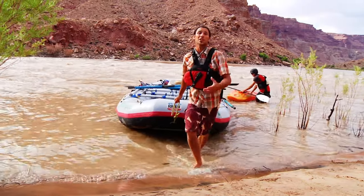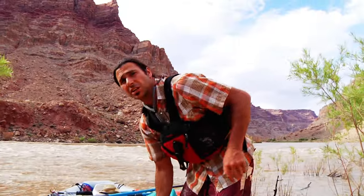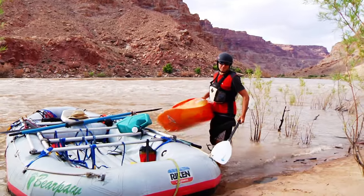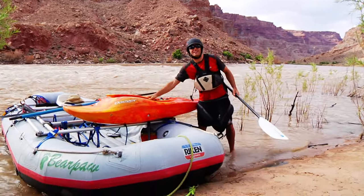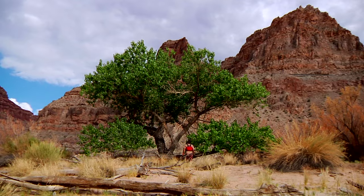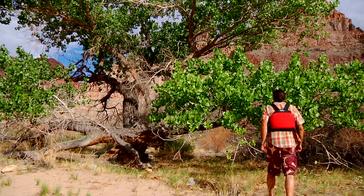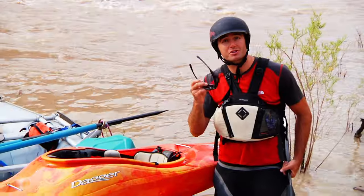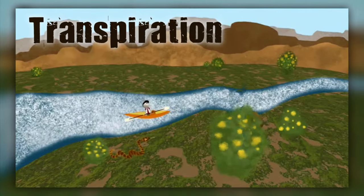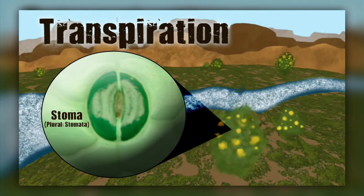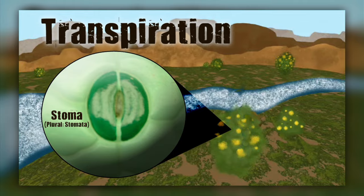About ninety percent of atmospheric moisture comes from evaporation. The other ten percent comes from plants — like that big tree over there. Plants are responsible for about ten percent of the water in the atmosphere through a process called transpiration, releasing water and oxygen as waste products through pores in their leaves and stems called stomata.